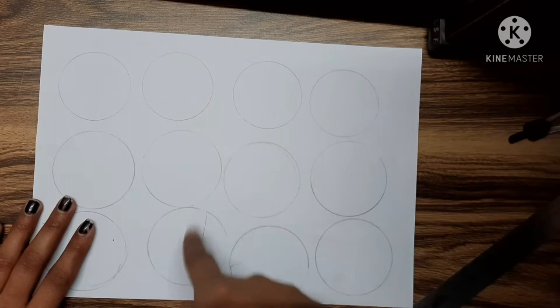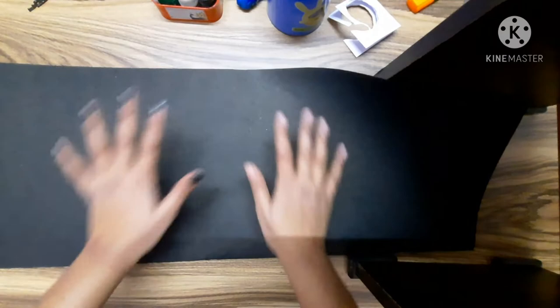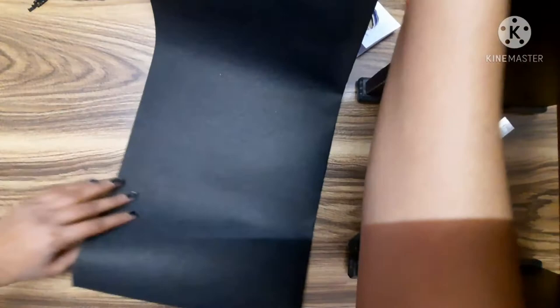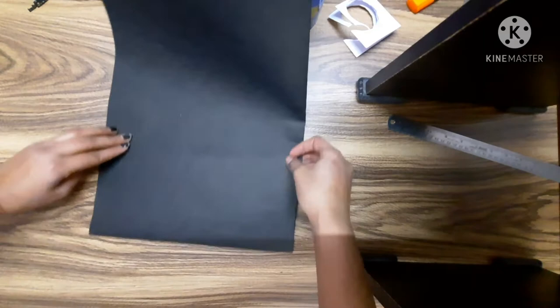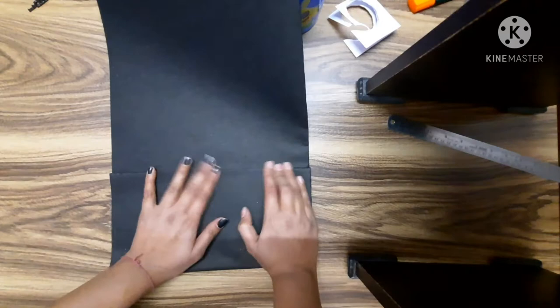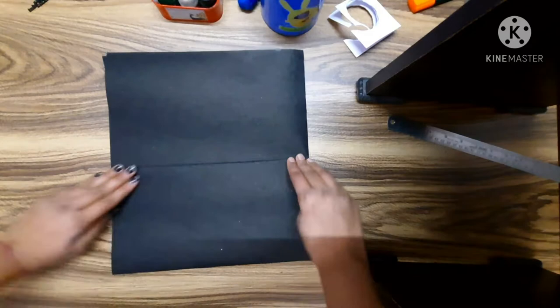Now take a black chart paper, fold it into half. Don't tear it, don't cut it, just fold it into half. Now what you will do, start folding it.